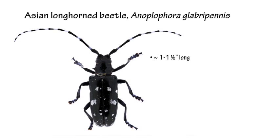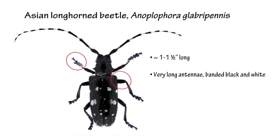The other key character are the very long antennae, which are banded black and white. Also, in fresh individuals you may notice some bluish coloring at the bases of the legs and on the tarsi.